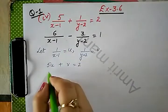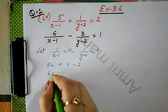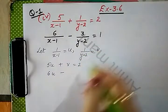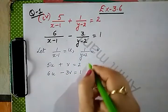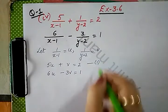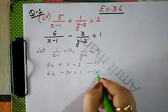The next one is 6 into u, that is 6u minus 3 into v, that is 3v is equals to 1. Name this equation as 1 and this as equation number 2.